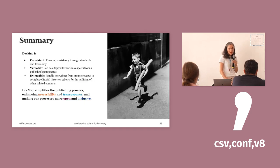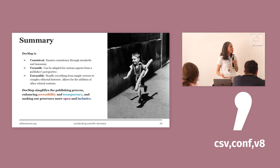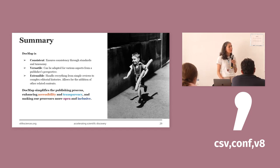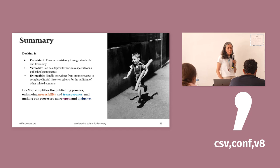In summary, DocMap ensures consistency through standards and taxonomy; it is versatile and can be adapted for various aspects from a publisher's perspective; and it is extensible, handling everything from simple reviews to complex editorial processes. As a last sentence: DocMap simplifies the publishing process, enhancing accessibility and transparency, and making our process more open and inclusive.